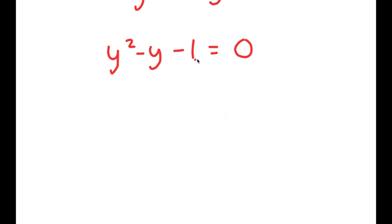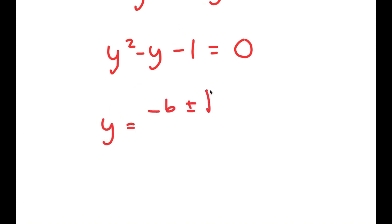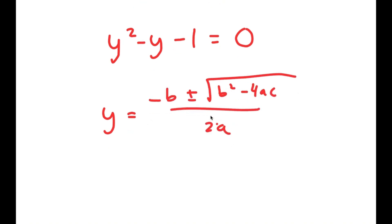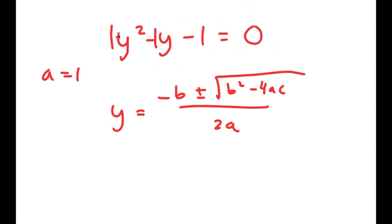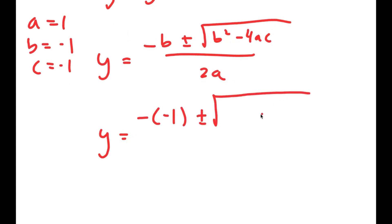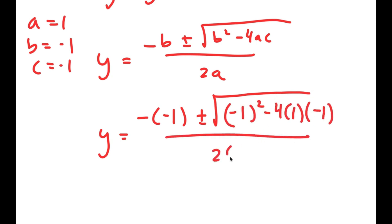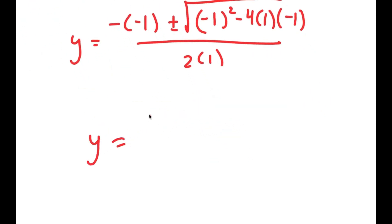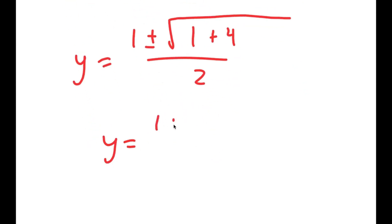So I get y squared minus y minus 1 is equal to 0. What we have here is a quadratic equation. To solve this, I'm going to use the quadratic formula: negative b plus or minus the square root of b squared minus 4ac, all over 2a. In this case, a is 1, b is negative 1, and c is negative 1. So I get y equals negative of negative 1 plus or minus the square root of negative 1 squared minus 4 times 1 times negative 1, all over 2 times 1. This is equal to 1 plus or minus the square root of 1 plus 4 over 2, which is equal to 1 plus or minus the square root of 5 over 2.